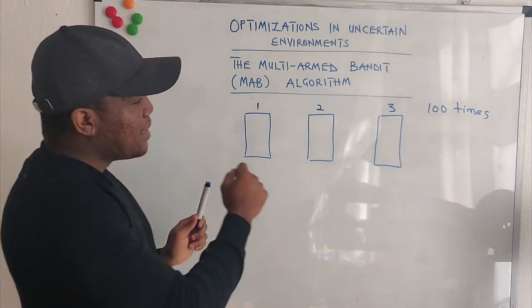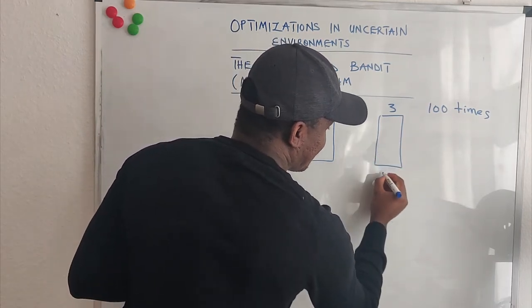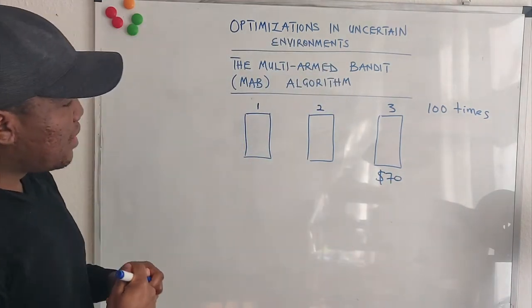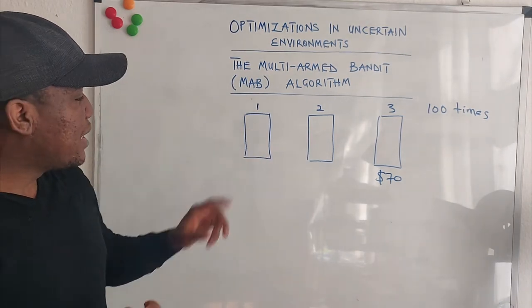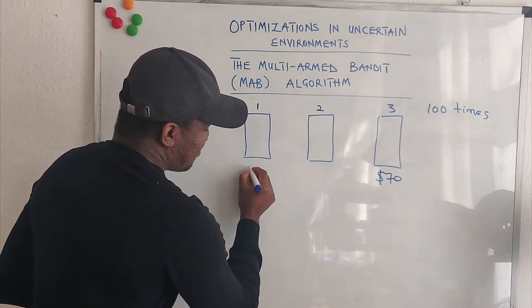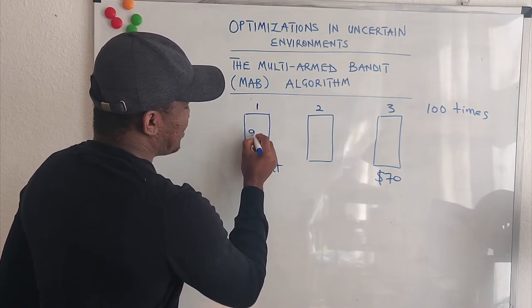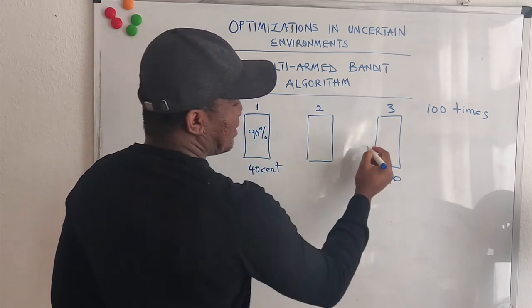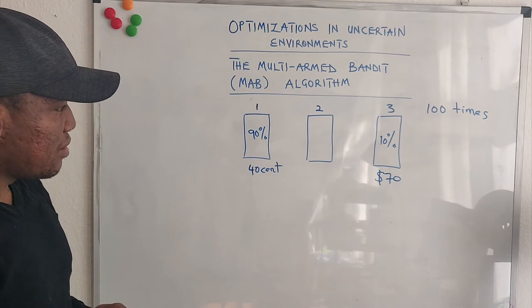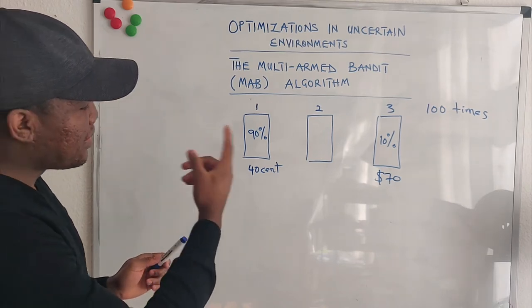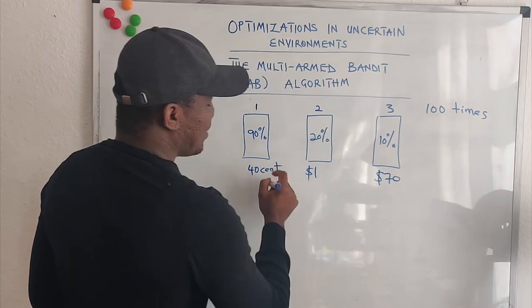For example, let's say there is a 10% chance that you get $70 from here. And let's say there is a 90% chance that you get $0.40 from here. So the probability is, let's say, 90%. And let's say this is 10%. And let's say over here, there is a 20% chance of finding $1 any time you open this door.